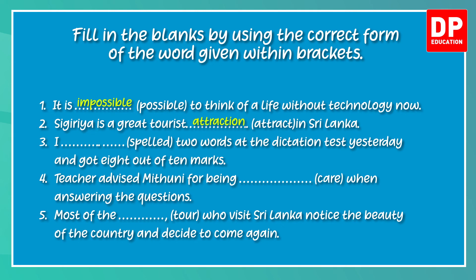For the third one, you have the verb 'spelled'. As two words have not been spelled correctly, you have to fill in the blank with the opposite of 'spelled'. To form the opposite you need a prefix. The new word should be 'misspelled' — you add the prefix 'mis' to the root word 'spelled'. 'I misspelled two words at the dictation test yesterday and got eight out of ten marks.'